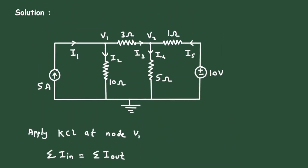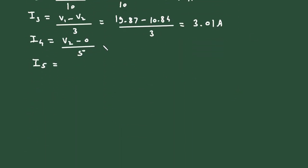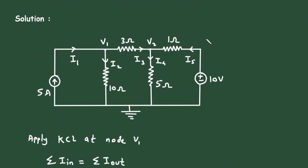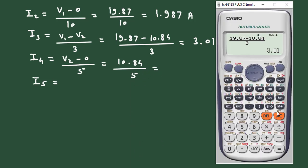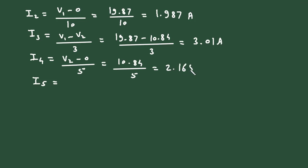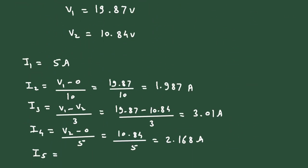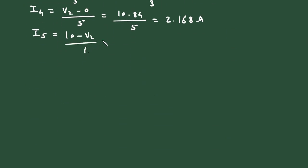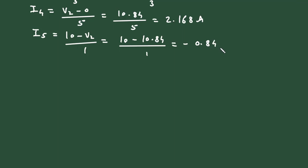I4 is V2 minus 0 divided by 5, which is 10.84 divided by 5, so I4 equals 2.168 ampere. I5 is 10 minus V2 divided by 1, which is 10 minus 10.84 divided by 1, so I5 equals minus 0.84 ampere.